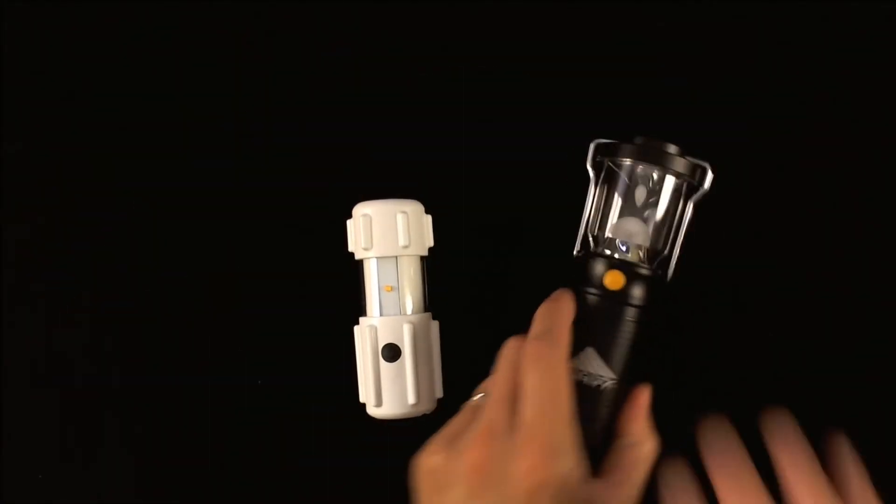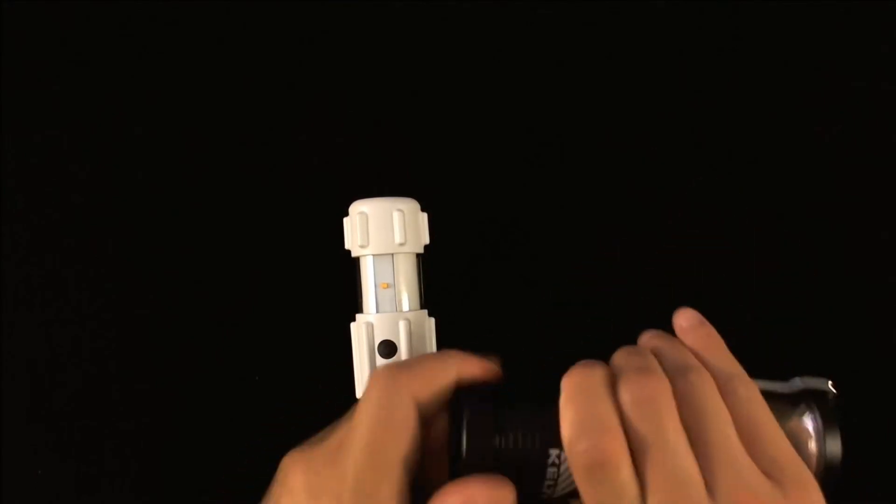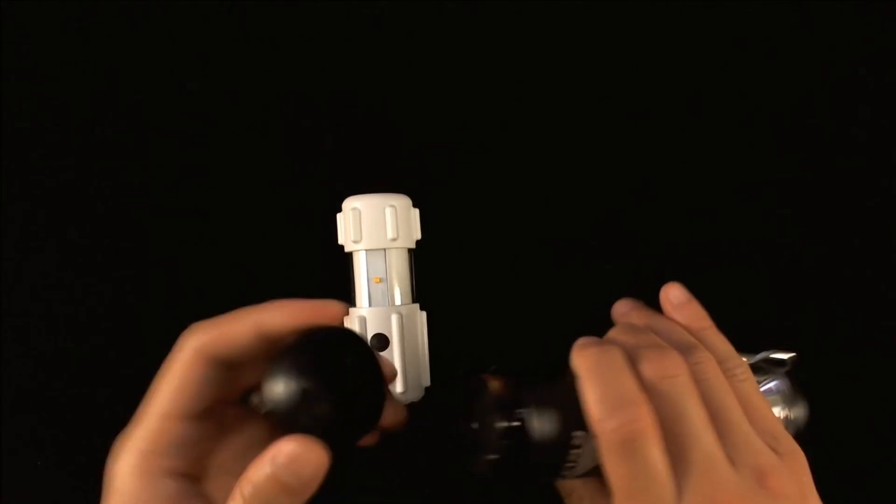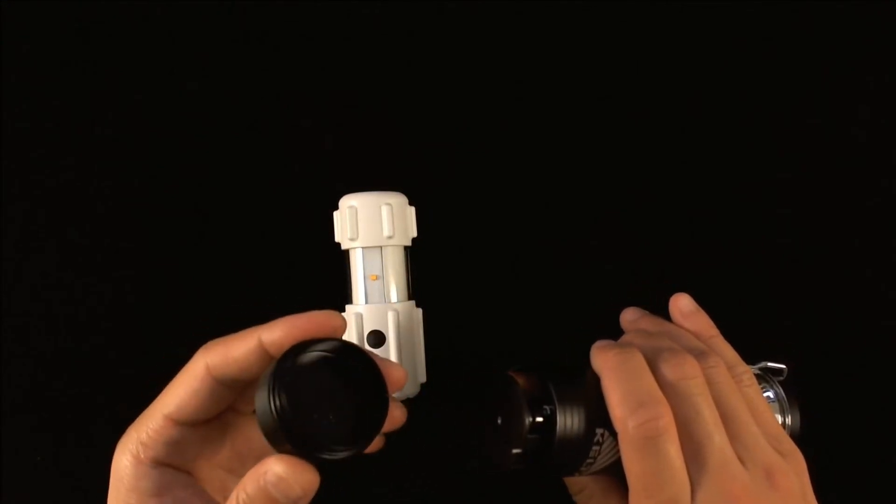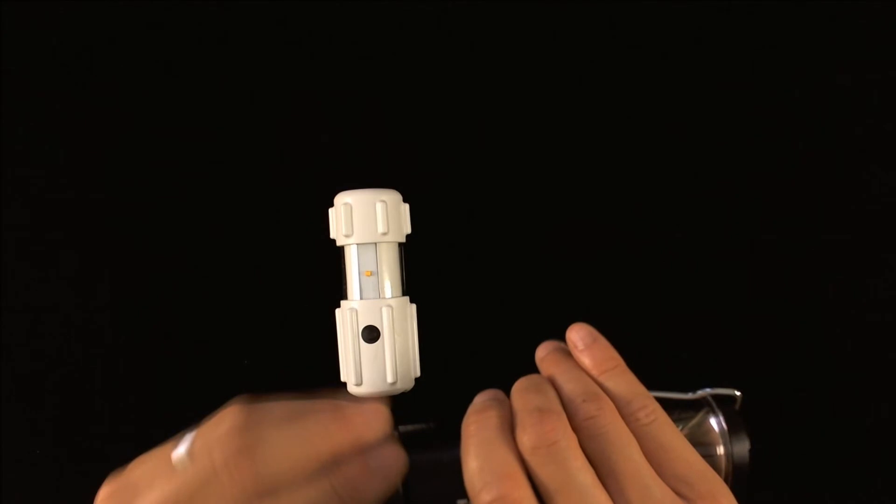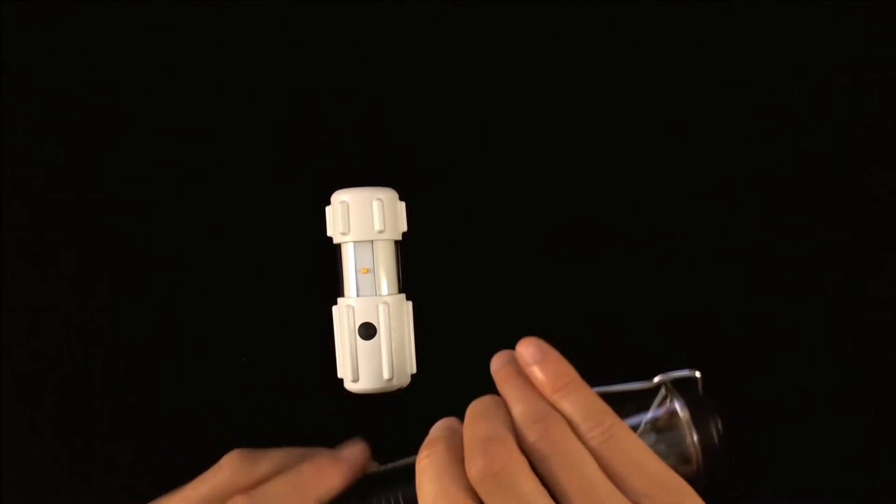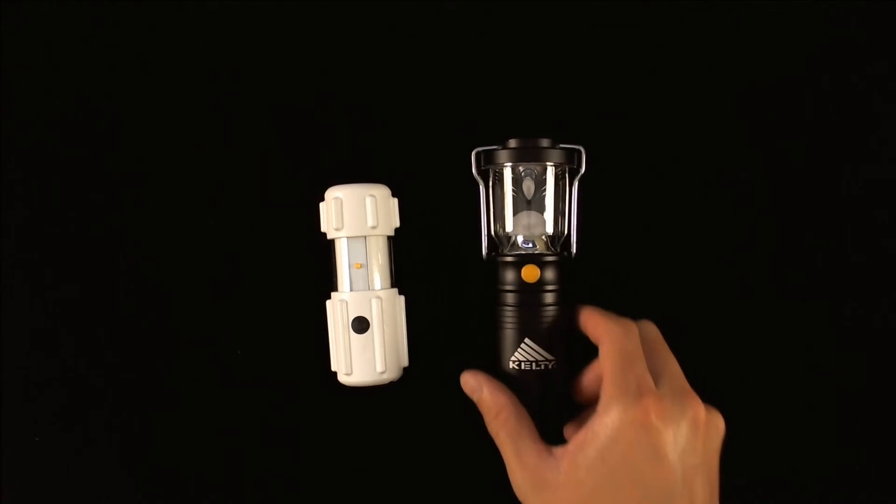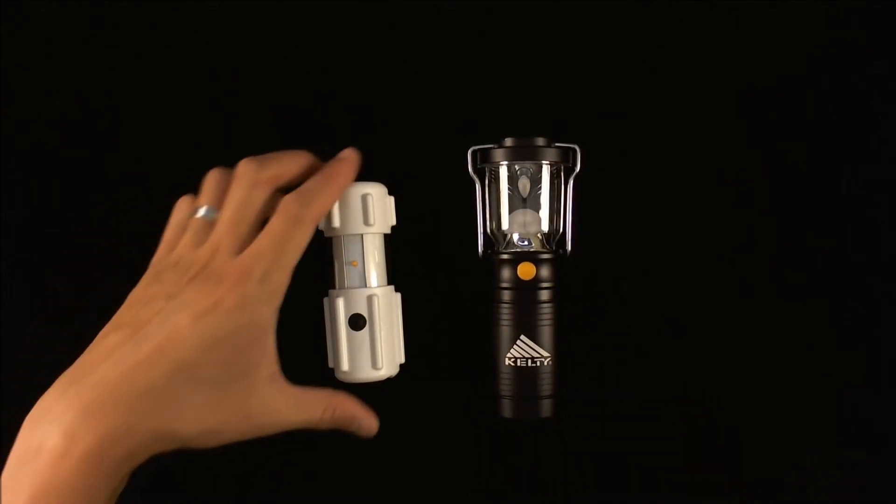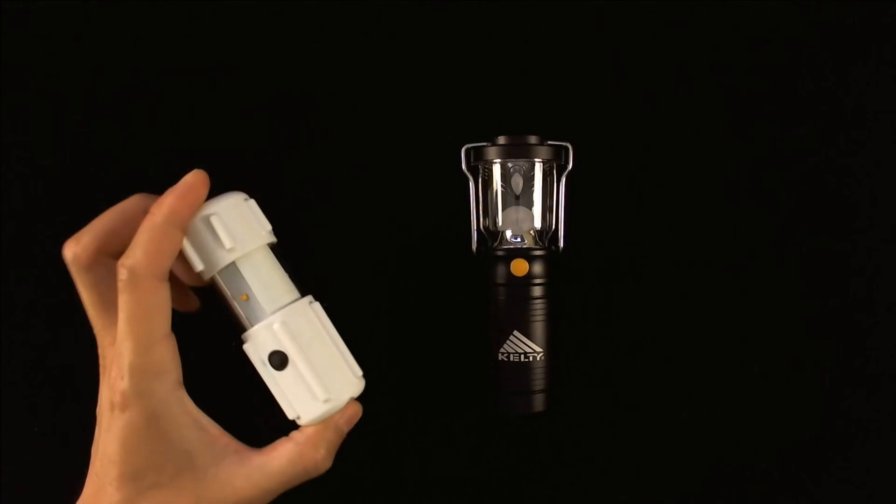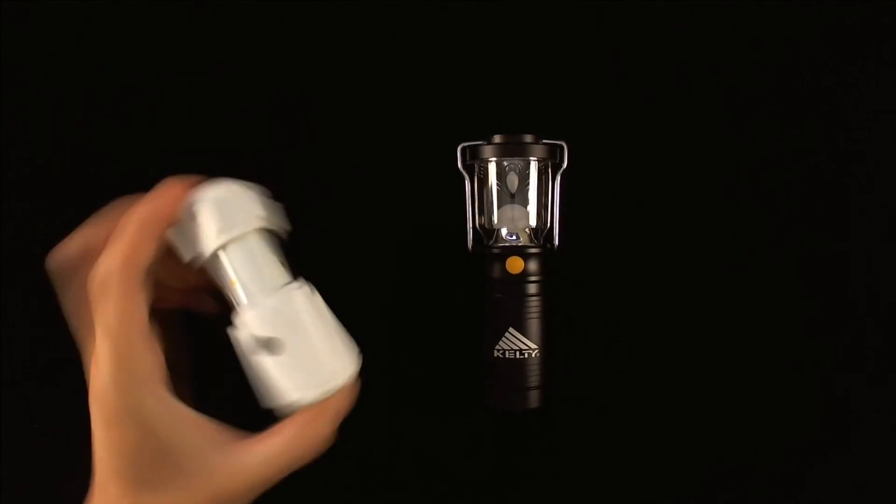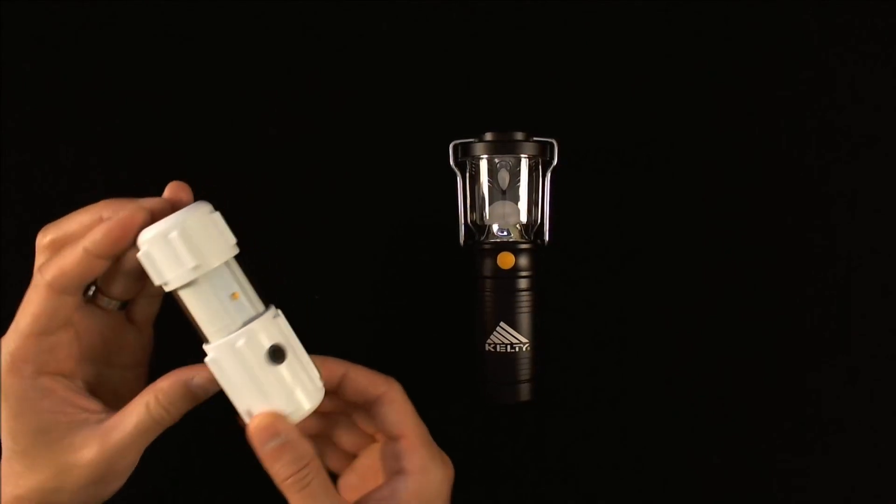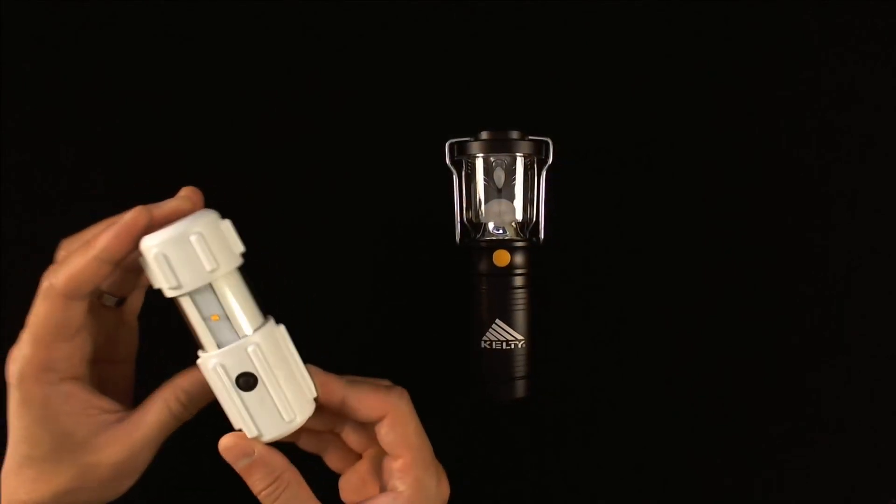While the Kelty Lumatech lantern does have an O-ring for sealing off the battery compartment, the Lumatech is simply rated as weatherproof which means that it cannot withstand any level of submersion underwater. The RPAL is rated IP67 which means that it can withstand submersion up to 1 meter in depth for approximately 30 minutes at a time. It also means that dust and particles will not impede the buttons from actuating.